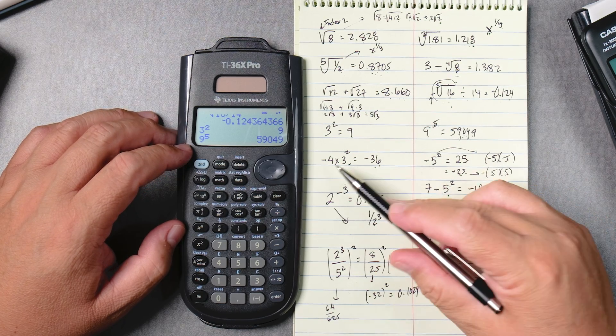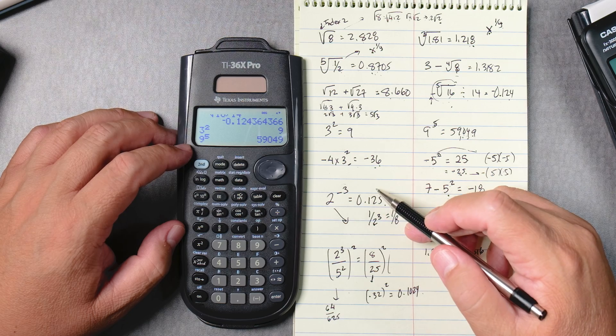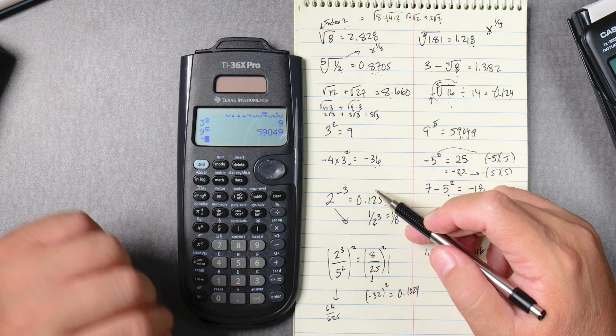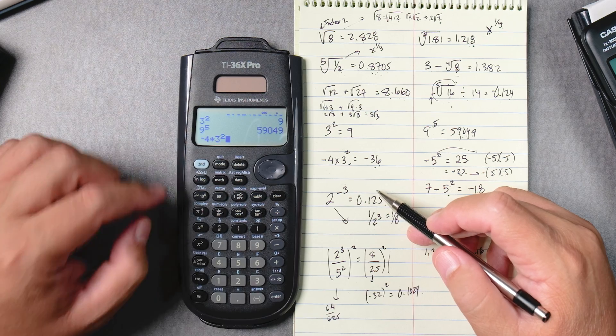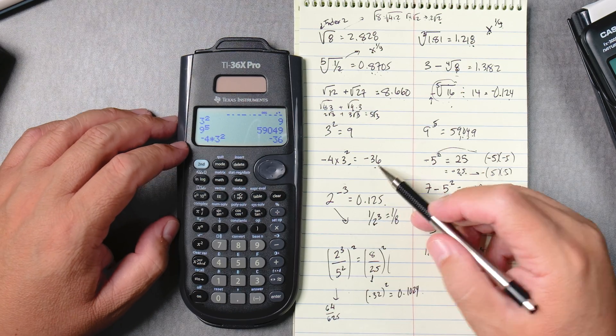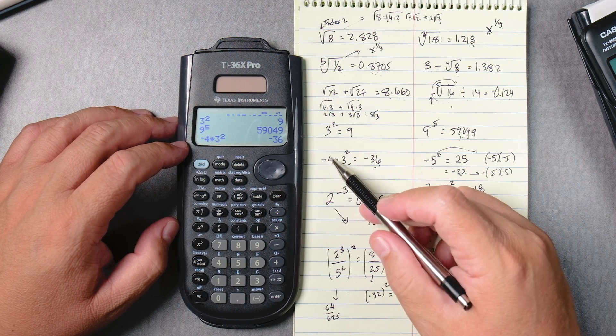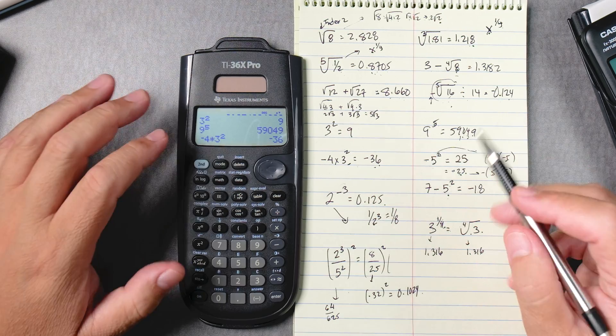Then here, negative 4 times 3 squared, this one press negative, then the 4 times 3 squared, enter, negative 36. So 3 squared is 9, negative 4 times 9, it's doing the order of operations correctly.